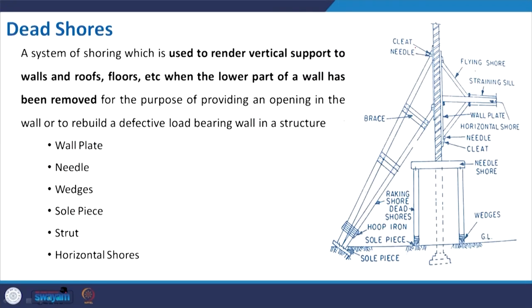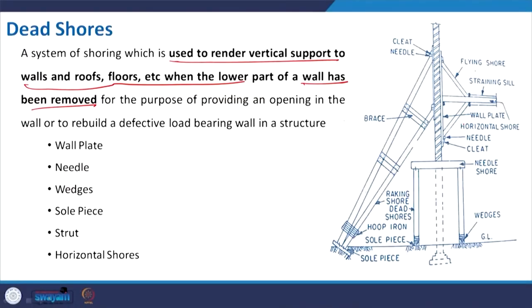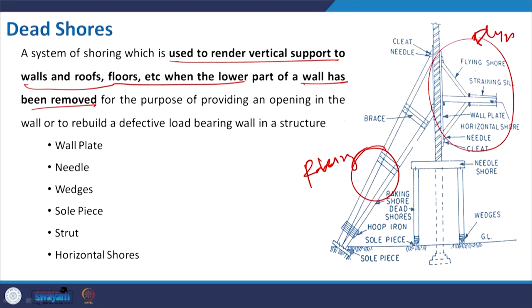Dead shore is basically used to render vertical support to walls, roof, and floors when the wall has to be removed or the foundation extended. It is a combination of all — you can see flying shore, racking shore, both present along with horizontal support as a temporary foundation before making corrections to the structure. Dead shore supports the weight of the structure above and all components need to be supported separately so it is not too heavy on the structure. Beams called needles are placed into holes and supported with vertical props — which can be timber, steel tubes, or a truss if heavy.